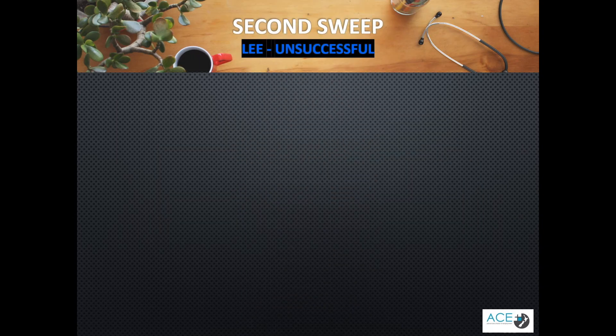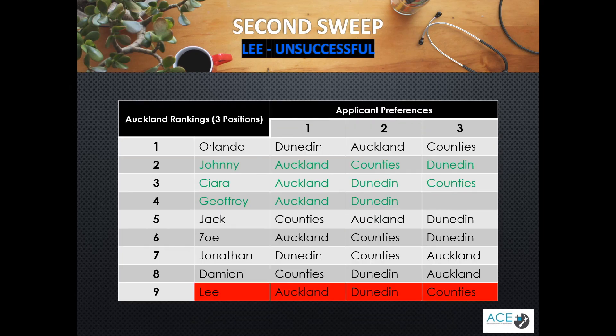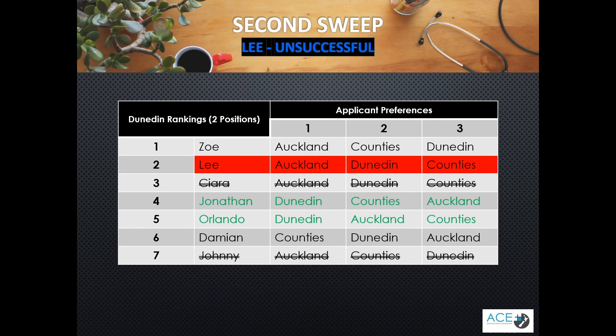Lee wasn't matched in any of the DHB runs, so let's see why that is. You will remember that Auckland was his first preference. Auckland were matched to Johnny, Kira and Geoffrey, as they all preferenced Auckland first and were ranked more highly than Lee. Auckland has filled all of their positions, so Lee is not matched. Lee ranked Dunedin second. While he was ranked highly by Dunedin, they filled their positions with applicants who preferenced them first, before the algorithm needed to look at applicants who preferenced them second. Lee is not matched here either.